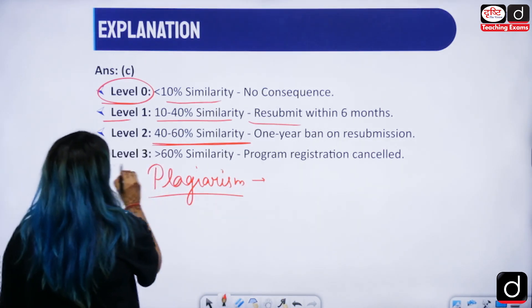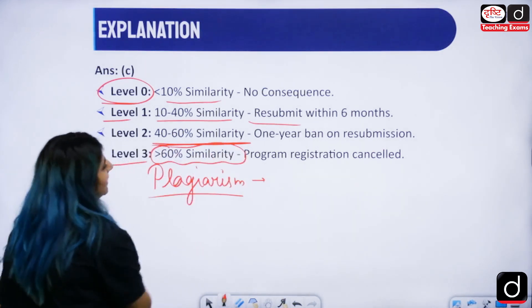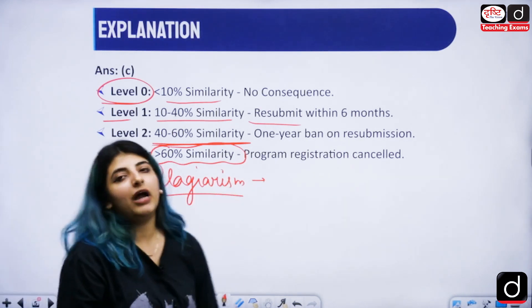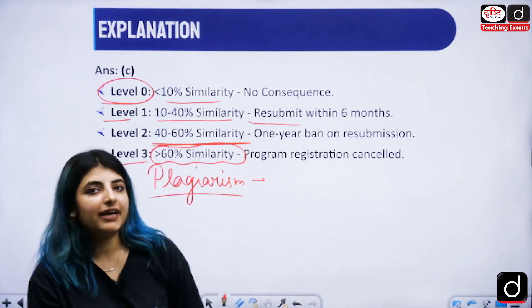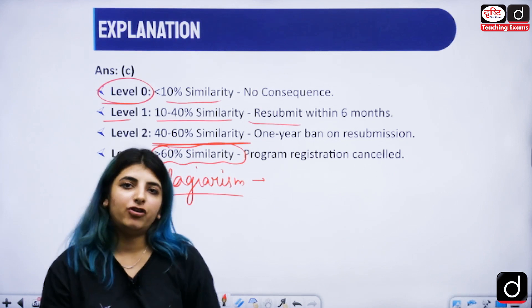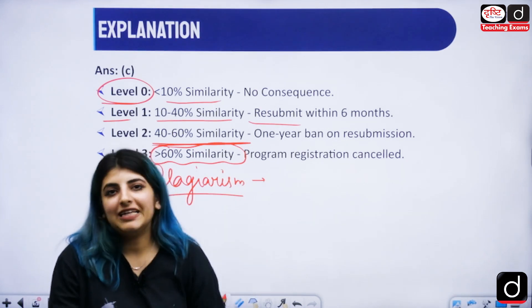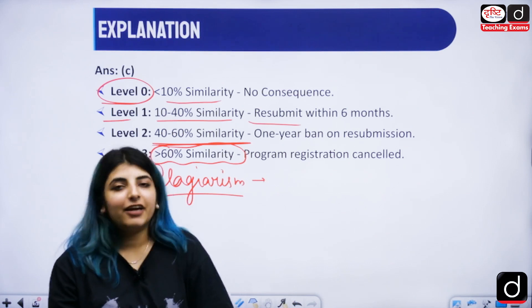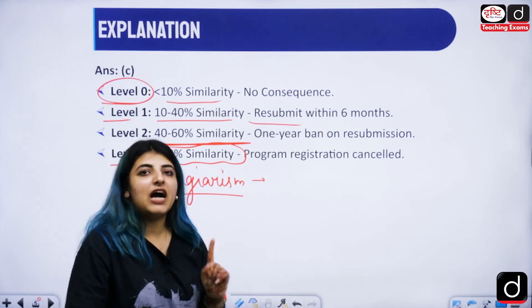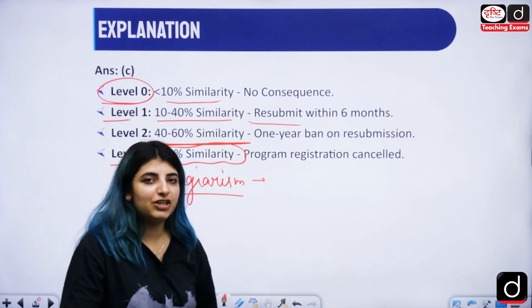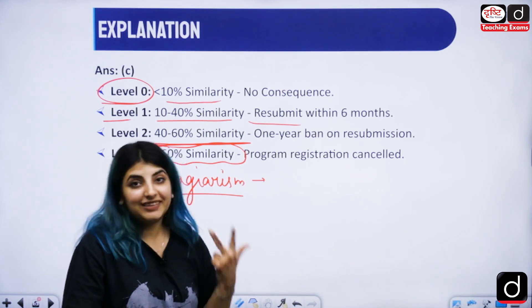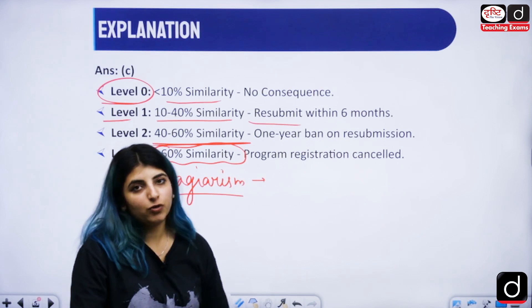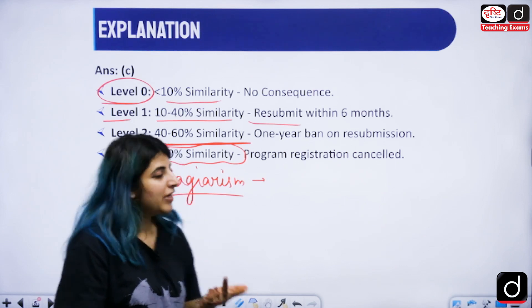So it's really important you cite the people. 60% or more similarity, your program registration will be cancelled and there are certain acts under which you can even be fined. You will not be able to do your PhD ever in your life again. So you need to be really very careful that you are citing the people whose works, books etc you are referring to.